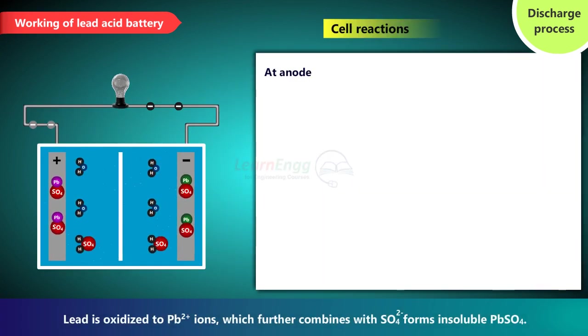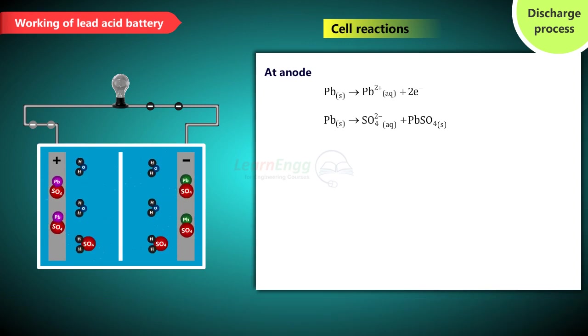At anode lead is oxidized to Pb2+ ions which further combines with SO4 2- forms insoluble PbSO4. Overall anode reaction.